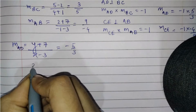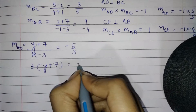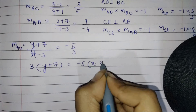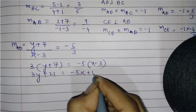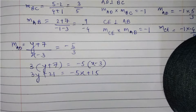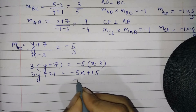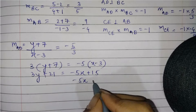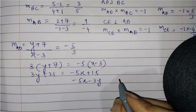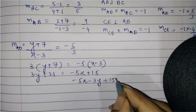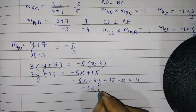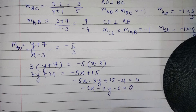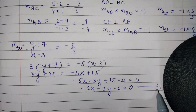Using MAD equals minus 5 by 3: 3 into Y plus 7 equals minus 5 into X minus 3. Expanding: 3Y plus 21 equals minus 5X plus 15. Rearranging: minus 5X minus 3Y equals 15 minus 21, which gives minus 5X minus 3Y minus 6 equals 0. This is our first equation.